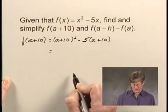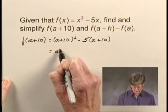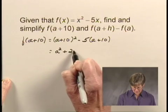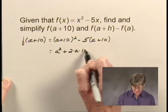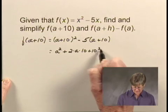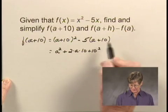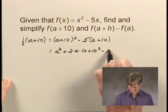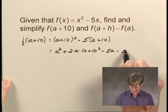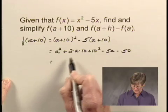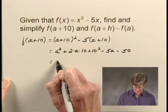Now here I'm squaring a binomial, and I'll get a squared plus 2 times a times 10 plus 10 squared, and I'll use the distributive law here. I have minus 5a minus 50.